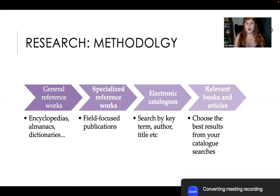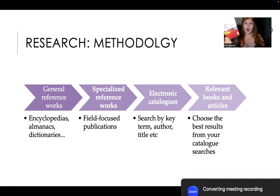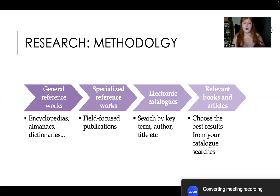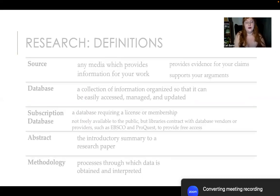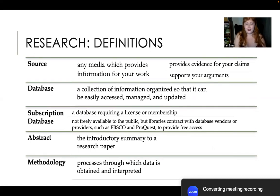There are general reference works — things like dictionaries and encyclopedias. You have specialized reference works, such as instead of a regular dictionary, something like a caps and spelling guide or a style guide, or the APA rules — any reference book specialized to a specific research field. Electronic catalogs let you search online for content using search engines specific to a library. And then of course books, articles, and all your usual print materials.